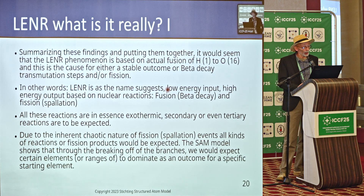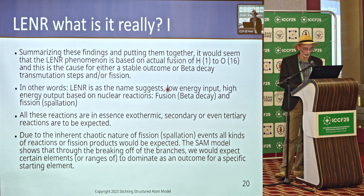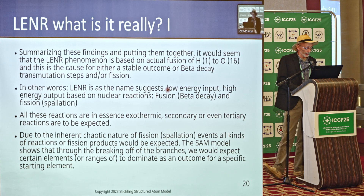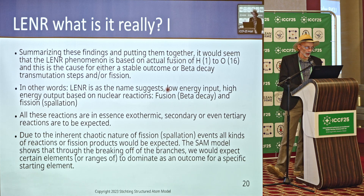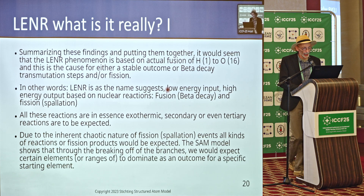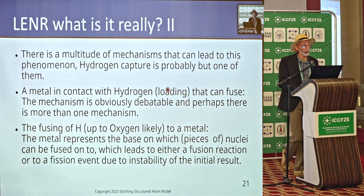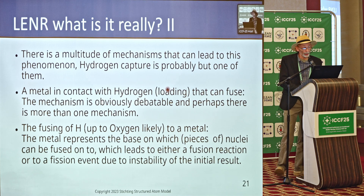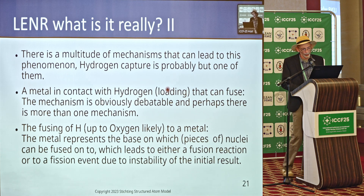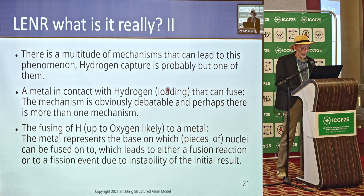Due to the inherent chaotic nature of fission, one can imagine a highly energetic environment in a metal where you can get all kinds of combinations — all kinds of reactions from fission products would be expected, as pointed out during the conference. The sample shows that the breaking off of branches means we would expect certain elements, or ranges of elements, to dominate as an outcome for a specific starting element. There is a multitude of mechanisms that can lead to this phenomenon — hydrogen capture is probably but one of them, and oxygen capture as well, and everything in between.